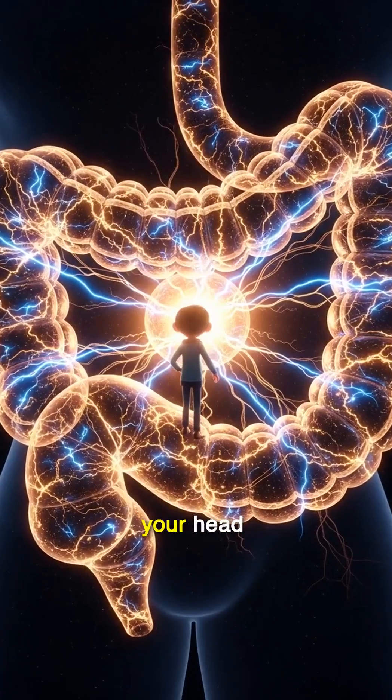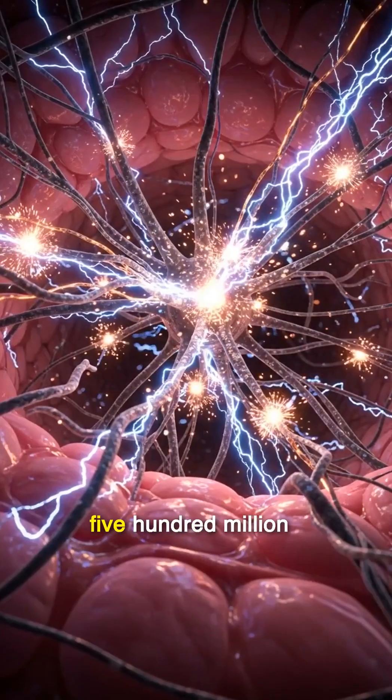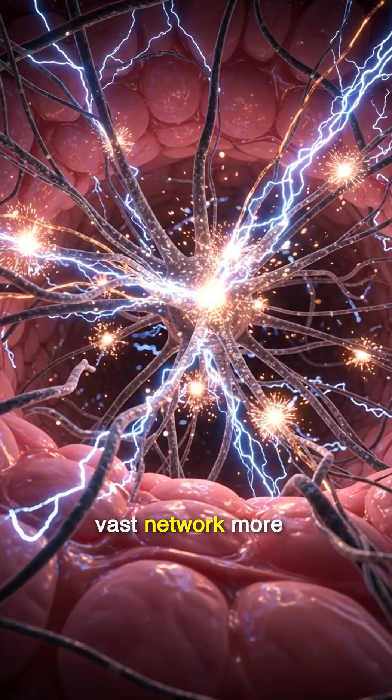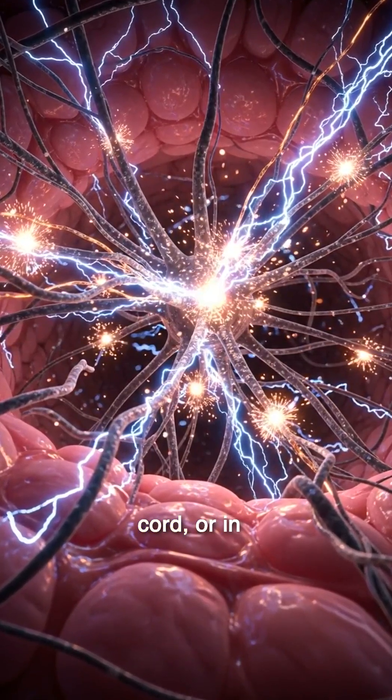You have a second brain, and it's not in your head. Inside your gut, 500 million neurons form a vast network, more than you'll find in the spinal cord or in many animals.